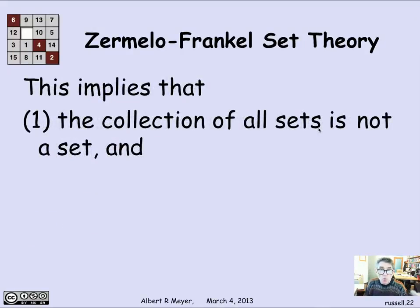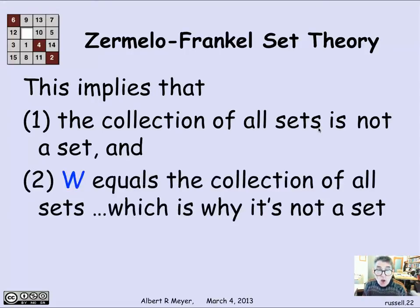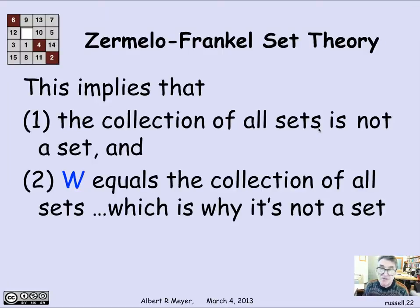Now, one of the consequences of the foundation axiom is that the collection of all sets is not a set. Because if it was, it would be a member of itself violating foundation. Well, since no set is a member of itself, W, which was the collection of sets that were not members of themselves, actually is all sets. And that means that W is not a member of itself. So W is not a set. And that is the final resolution of how the foundation axiom fixes Russell's paradox and explains just why it is that W is not a set.